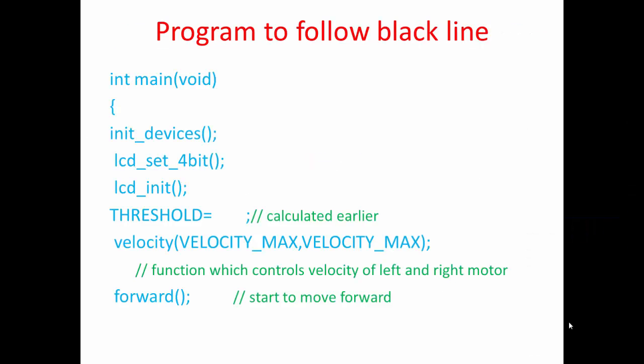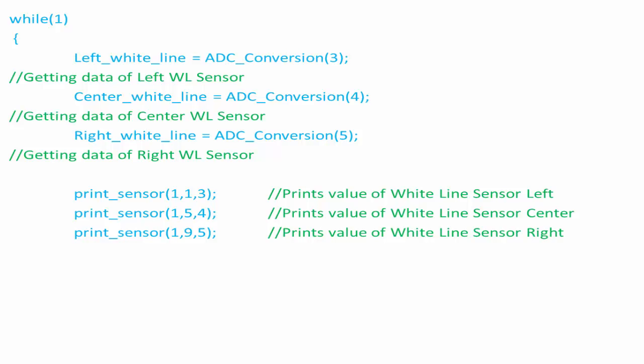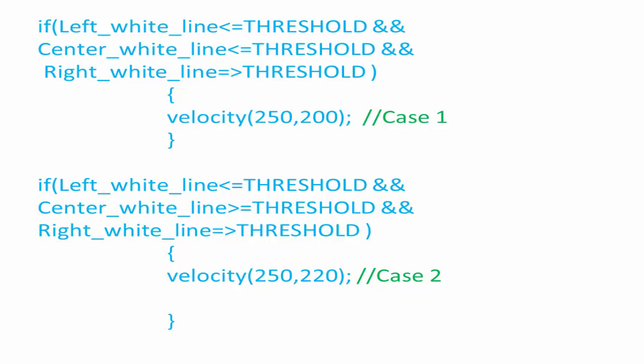Let us start with the programming now. The main function starts with initialization by calling various functions. A variable 'threshold' is fed with the value calculated earlier. The velocity function is used to set the velocity of individual wheels. Anything written inside the while loop runs continuously. The variables left_white_line, center_white_line, and right_white_line are fed with their respective ADC converted values and printed on the LCD. The cases discussed earlier are written in the form of logical statements.